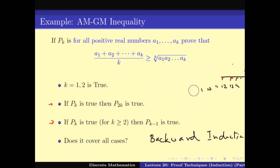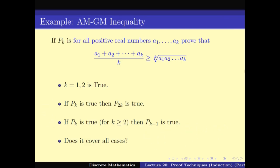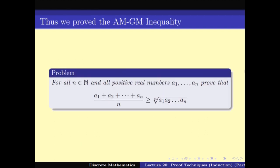Using this pretty interesting inductive technique, we can now prove that for all n, AM ≥ GM. We have seen quite a number of induction versions for solving various problems, mostly in inequalities and numbers. But induction can also be used to solve various interesting combinatorial problems. We will be seeing one such example in the next video. Thank you.